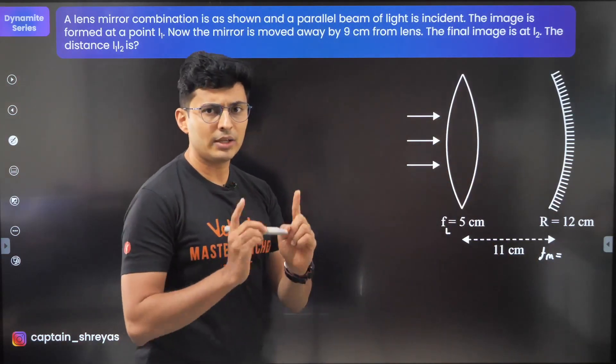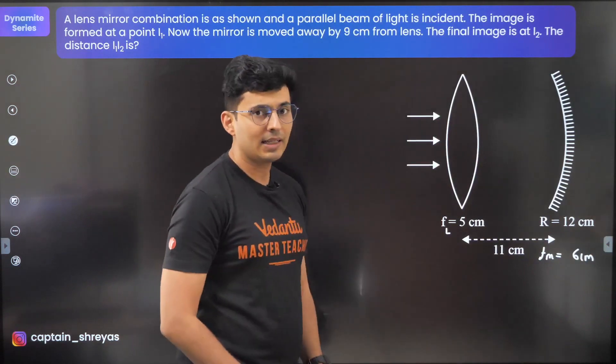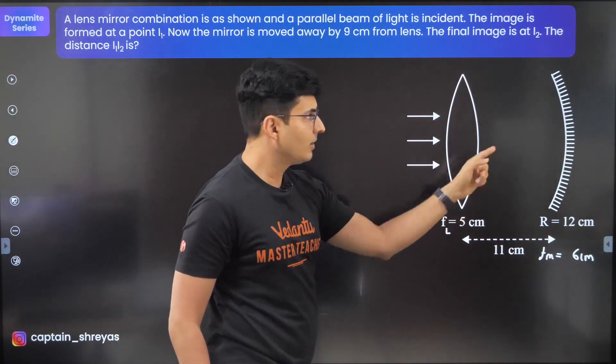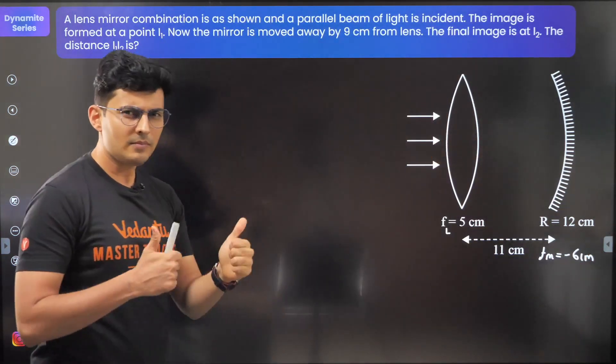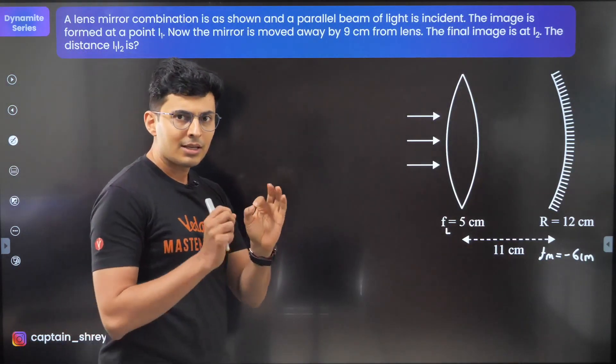The focal length of the mirror will be radius of curvature by 2, so 12 by 2 is 6, so it's 6 centimeters. But take care of the sign: it's a concave mirror. That side is positive, this side is negative. The focal point will be here, so it should be minus 6.